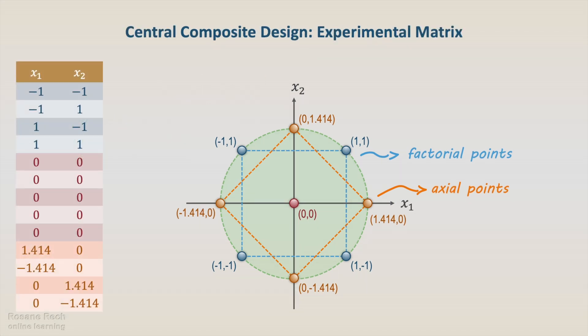The experimental matrix of a central composite design consists of nf equal to 2 to the power of k factorial points, nc center points, and na equal to 2k axial points.